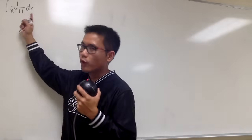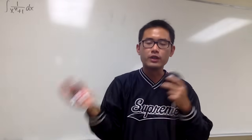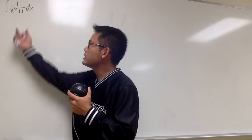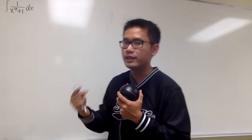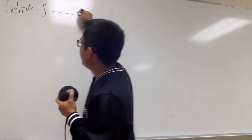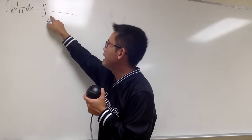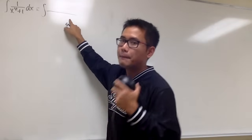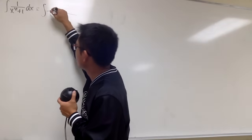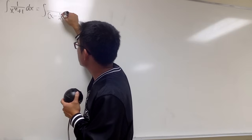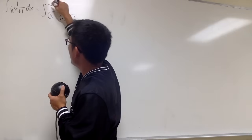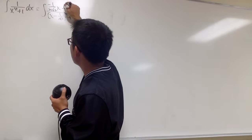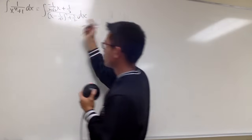Finally, we can integrate 1 over x to the fourth power plus 1. Using the partial fractions results, we break this into two integrals. For the first, the denominator is written as x minus 1 over square root of 2, squared, plus 1 half, and the numerator is negative 1 over 2 square root of 2 times x, plus 1 half.